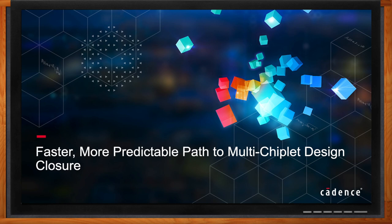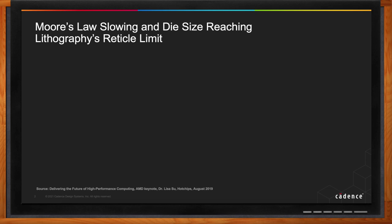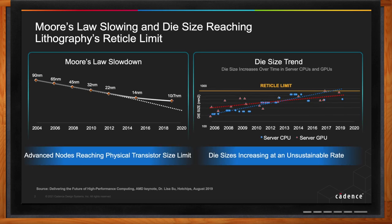These days we hear a lot about multi-chiplet designs, and there are a couple of trends really driving toward that. First of all, Moore's Law has been our guiding principle for designing large processors and large ICs. In recent years, with node shrinks, we are going down to 10, 7, 5, and we have reached 3 nanometers.